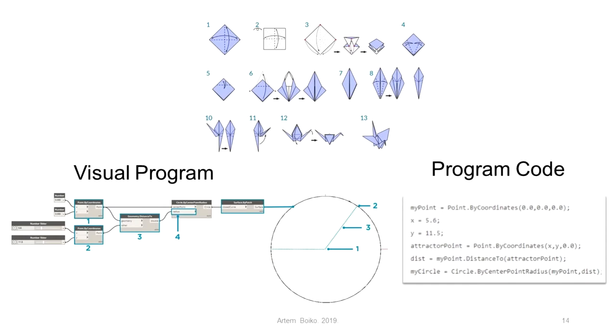On the slide we can compare the programming of the same algorithm, drawing a circle by a point in the form of blocks and code. On the right you see the program code with which you can build a circle through two points. On the left, the same circle built through the Dynamo tool.